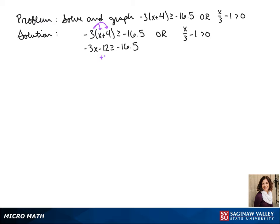We add 12 to both sides and we get -3x ≥ -4.5.